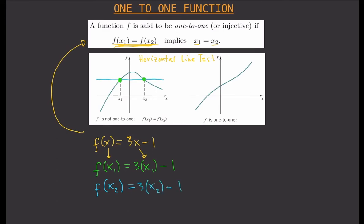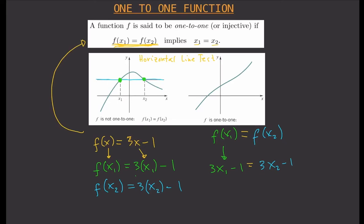Now we have f(x₁) and f(x₂). We equate them: f(x₁) = f(x₂), which gives us 3x₁ − 1 = 3x₂ − 1. We simplify by cancelling negative one from both sides, then divide both sides by three, and we are left with x₁ = x₂.